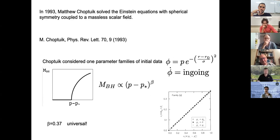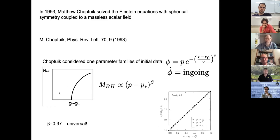This is a picture from Choptuik's paper where he compares three different families of initial data. This is a log-log version of the plot, so it would be a straight line, with the critical point at minus infinity.